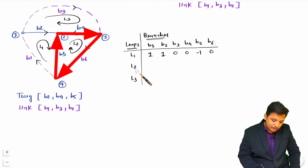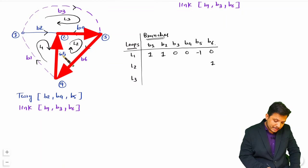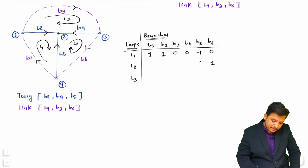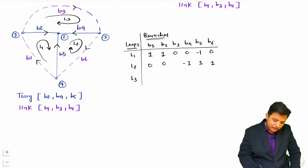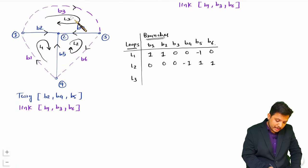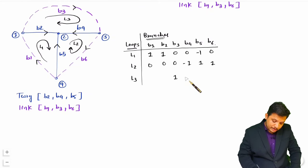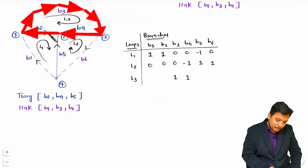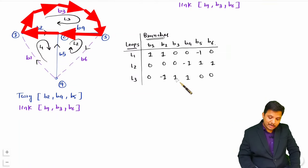For loop 2: B6 is in the direction of the loop so it is +1. B5 is also in the direction of loop 2 so it is +1. B4 is in the opposite direction to loop 2 so it is −1. B1, B2, and B3 are not connected, so they are 0. For loop 3: B3 is in the direction of the loop so it is +1. B4 is also in the direction of loop 3 so it is +1. B2 is in the opposite direction to loop 3 so it is −1. B1, B5, and B6 are not connected with loop 3 so they are 0. This completes the tie set matrix, also called the fundamental loop matrix.